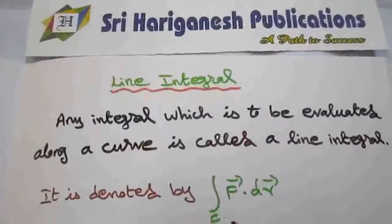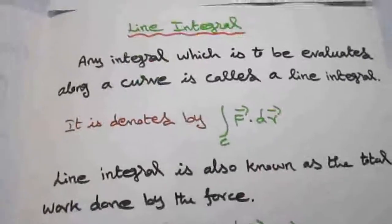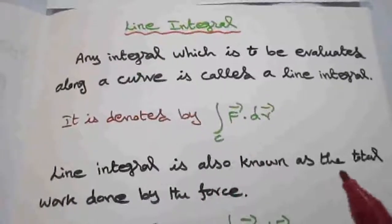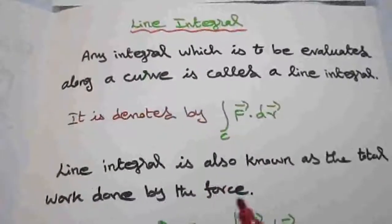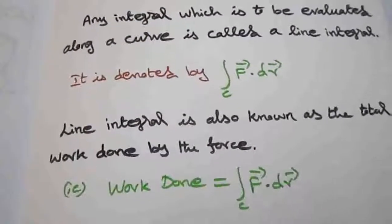It is denoted by integral over c, f dot dr. Now the line integral is also known as total work done by the force. That is, work done is equal to integral over c, f dot dr.